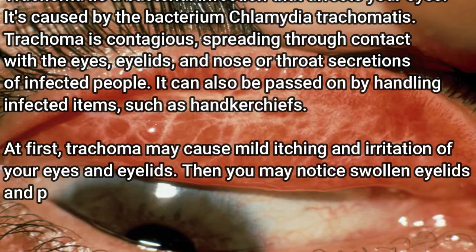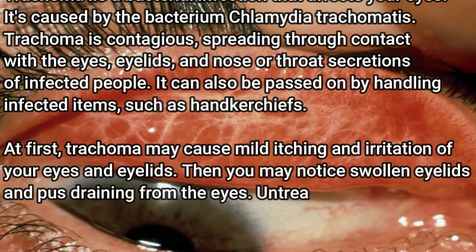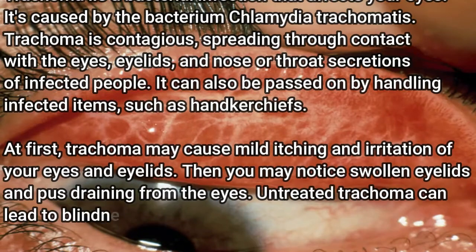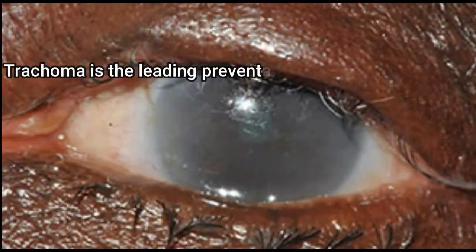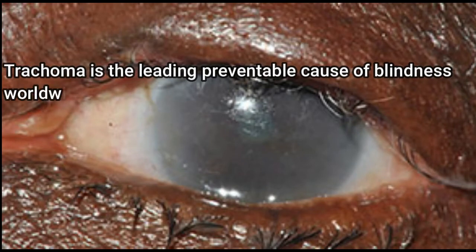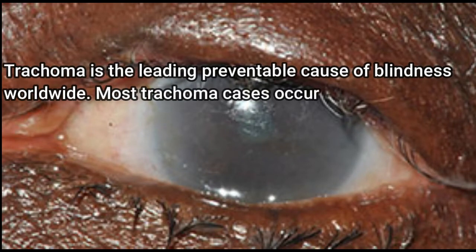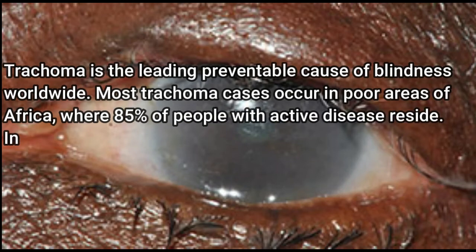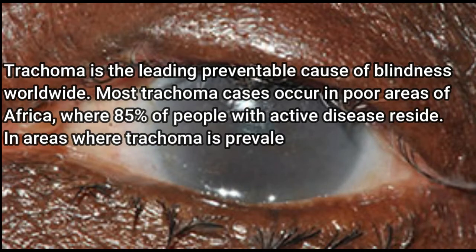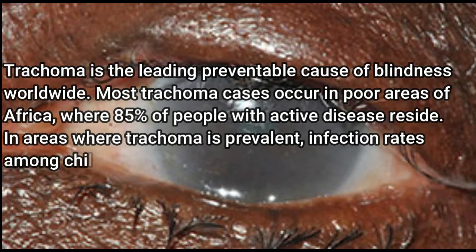At first, trachoma may cause mild itching and irritation of your eyes and eyelids. Then you may notice swollen eyelids and pus draining from the eyes. Untreated trachoma can lead to blindness. Trachoma is the leading preventable cause of blindness worldwide. Most trachoma cases occur in poor areas of Africa, where 85% of people with active disease reside.